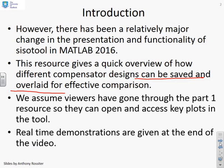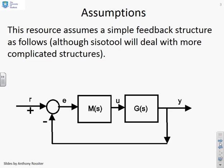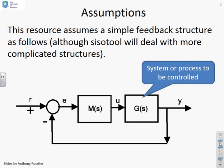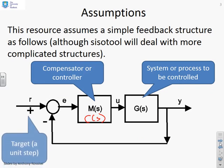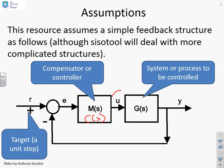We're going to give real-time demonstrations at the end of this video. Some assumptions then. We're going to assume a loop structure like this. G(s) represents the process, M(s) the compensator. As it happens, CISOTOOL uses the notation C(s) here. The target is given by R, the input is given by U, and the output is given by Y.